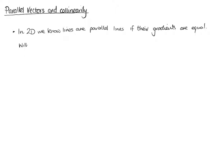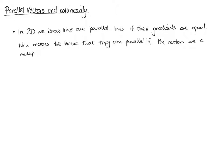With vectors, we know that they are parallel if the vectors are in some multiple k — so they're a multiple of each other. That can be a fraction or a whole number. So this means if a is equal to some constant kb, the lines are parallel.